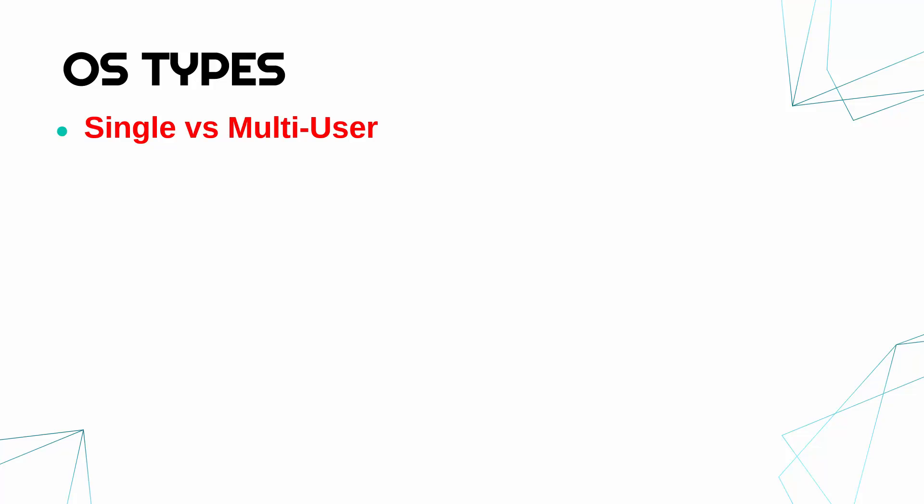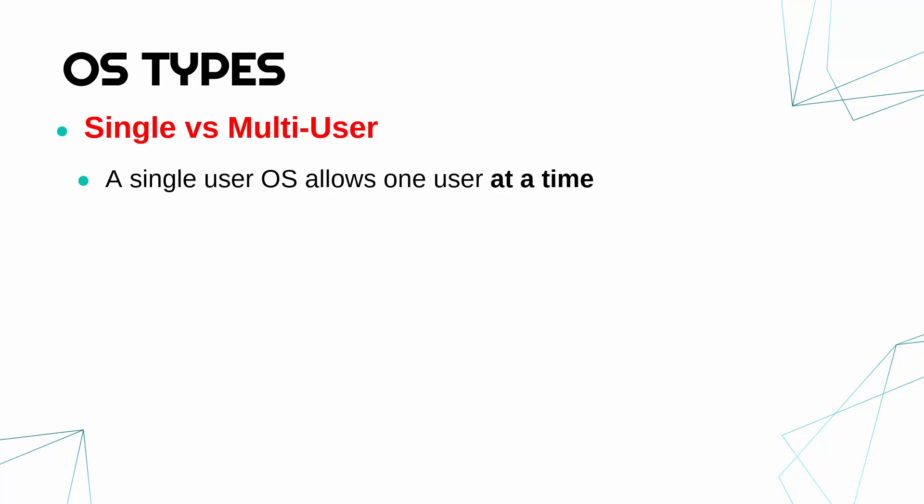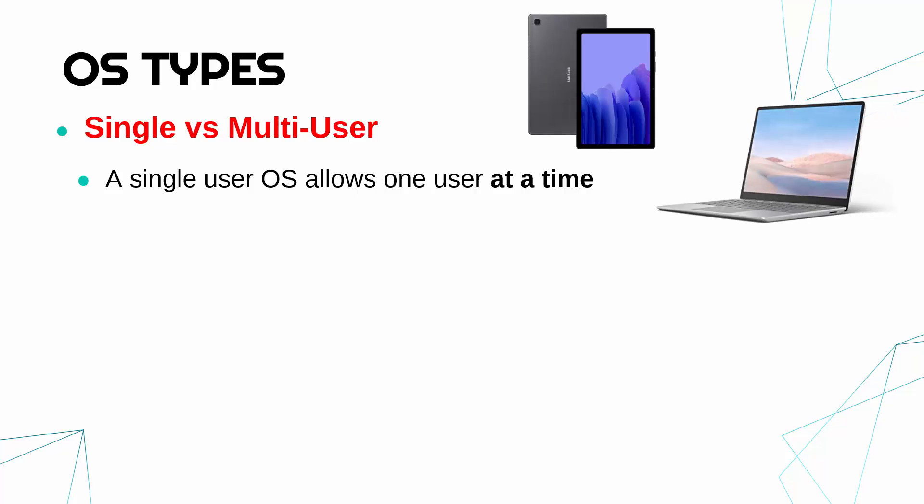You need to know a couple of types of operating systems. First, single-user versus multi-user. A single-user OS only allows one user at a time. Your laptop, phone, and tablet are likely using a single-user OS. Something like Microsoft Windows can allow different user accounts, but Windows is still a single-user operating system — 'at a time' is the crucial thing. You can have multiple accounts, but they can't be used at the same time in Windows, Mac OS, or Linux. Most operating systems are single user.